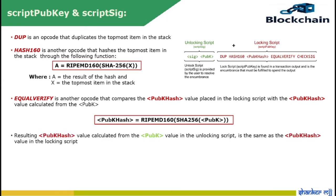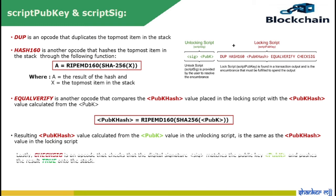If the resulting public key hash value calculated from the public key in the unlocking script is the same as the public key hash value in the locking script, execution will be allowed to continue. Lastly, OP_CHECKSIG is an opcode that checks that the digital signature SIG matches the public key pubKey and pushes the result onto the stack. Digital signatures are created by the owner of the public key and therefore serve as a way of ensuring that the individual is authorized to spend the funds.